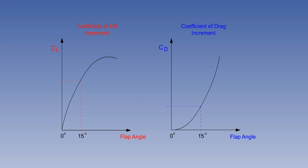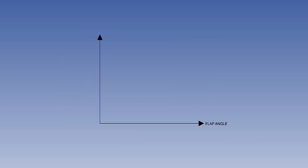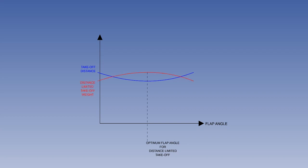For jet transport aircraft, the optimum flap angle for take-off is approximately 15 degrees. We can see that increasing flap angles result in a decreasing take-off run. But beyond the optimum take-off flap angle, the distance increases. The operational advantage of using the optimum flap angle for take-off is to carry more weight from a given runway length.